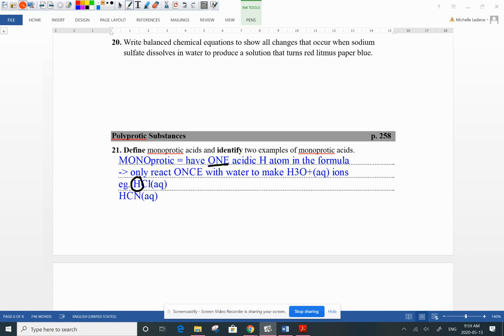Here's another example, hydrocyanic, HCN, 1H in the formula. Now this guy is a strong acid and this guy is a weak acid.